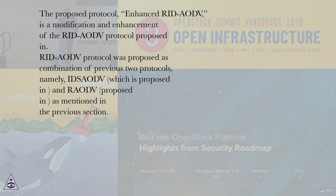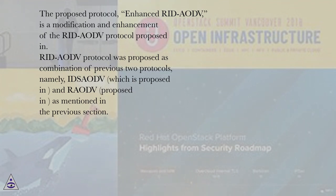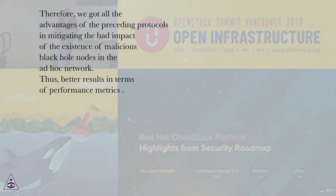The Enhanced RID ODES is a modification and enhancement of the RID ODES protocol. RID ODES protocol was proposed as a combination of two previous protocols, namely IDSAIT and READS, as mentioned in the previous section. Therefore, we get all the advantages of the preceding protocols in mitigating the bad impact of malicious black hole nodes in the ad hoc network, resulting in better results in terms of performance metrics.